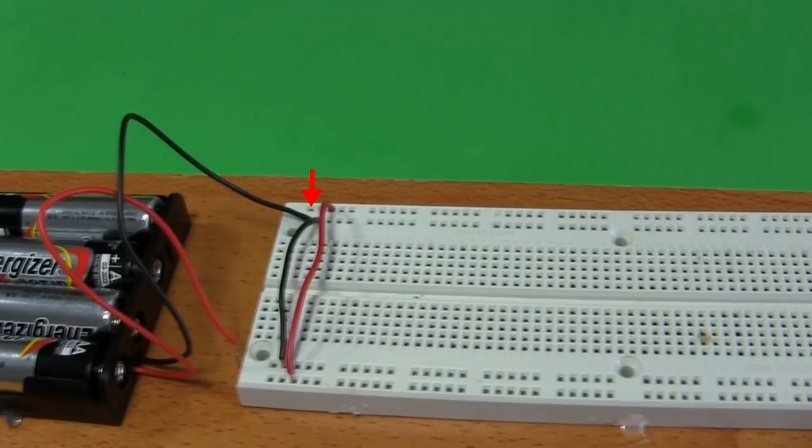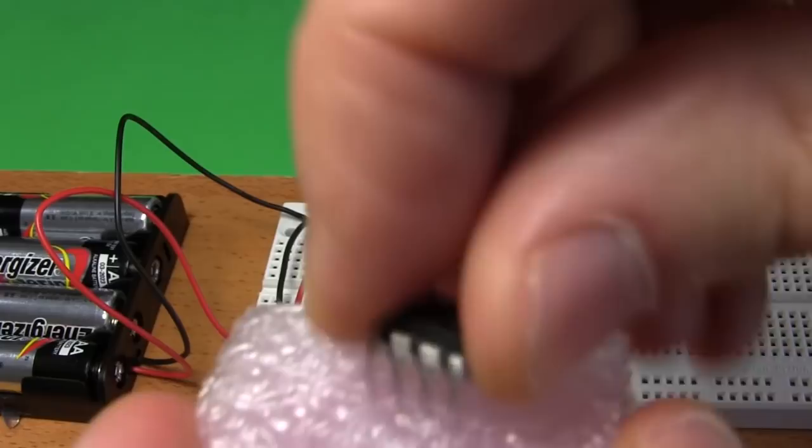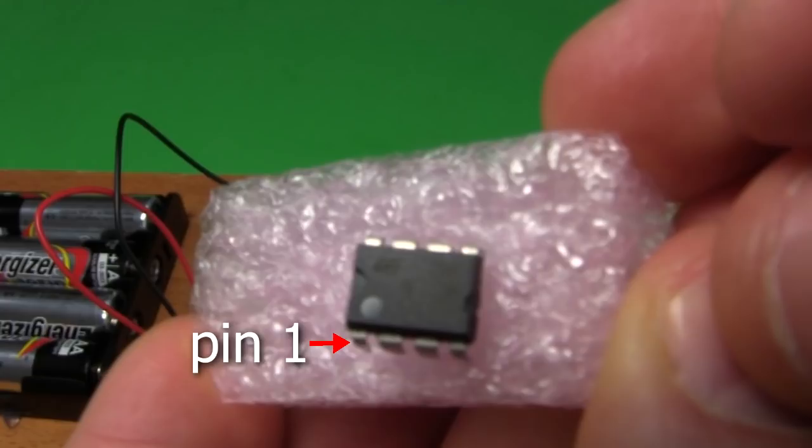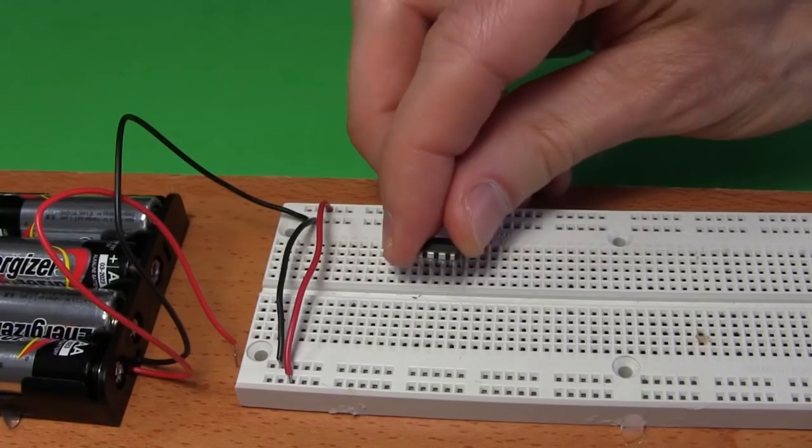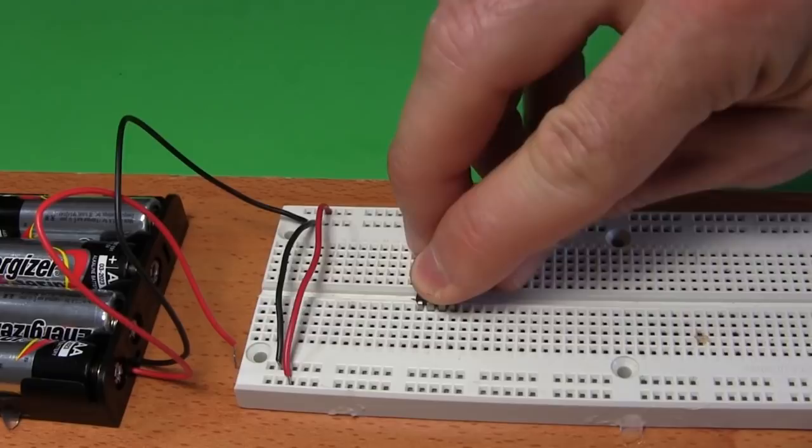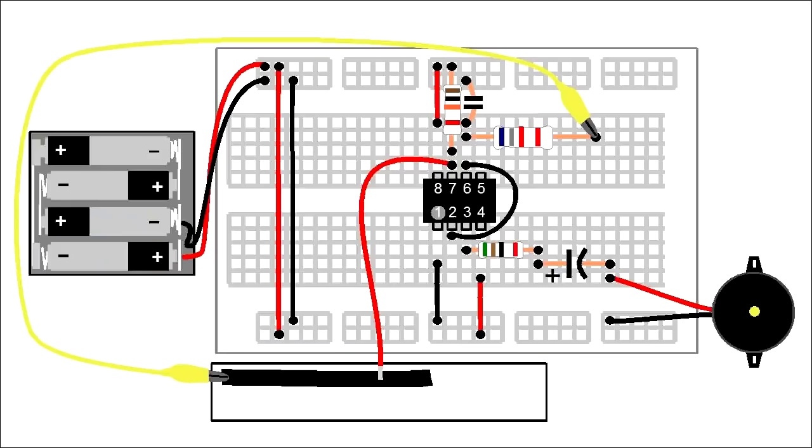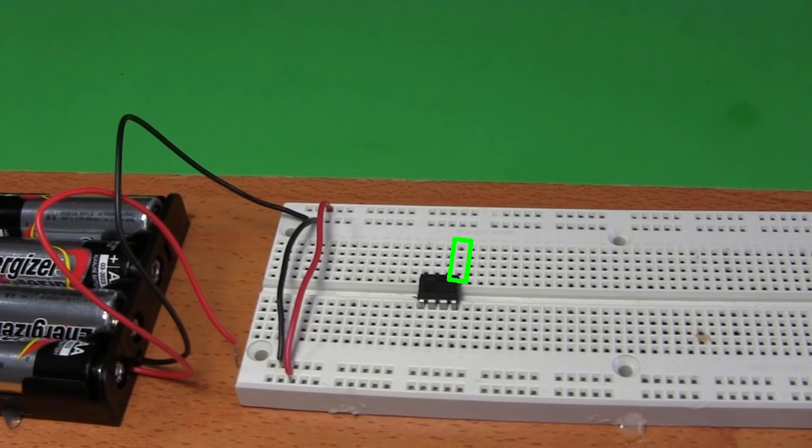If you look closely at the 555 timer chip you'll notice it has eight pins. And in this corner is a round dot. That dot means the pin at that corner is pin one. Put the chip here in the breadboard so that the deep ridge in the middle of the breadboard runs under it. That way all these holes are connected to this pin, all these holes are connected to this pin, all these holes are connected to this pin, and so on.